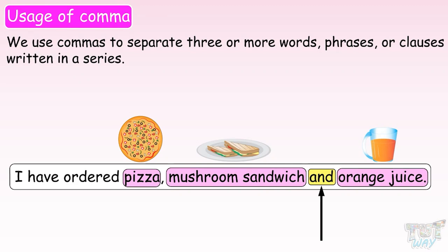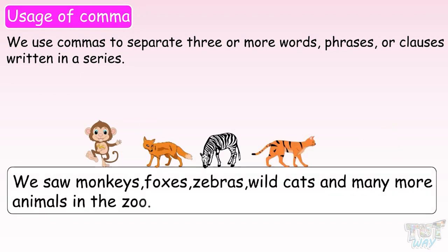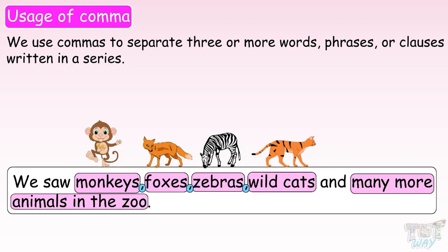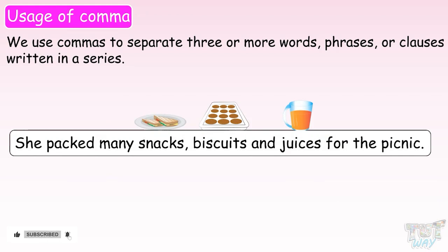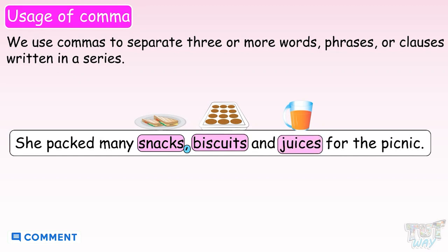Here we have another example: We saw monkeys, foxes, zebras, wild cats and many more animals in the zoo. Here too we have to use commas to separate the initial items in the list, but for the last part we have used AND. She packed many snacks, biscuits and juices for the picnic. Again, you can notice that we use commas to separate initial items in the list, and for the last item we use AND.